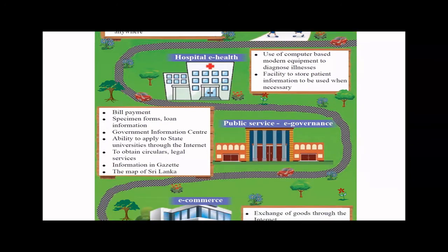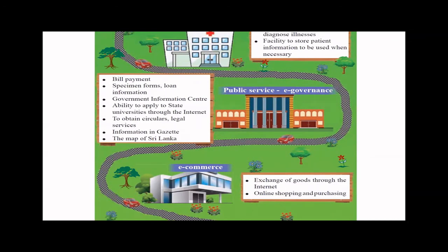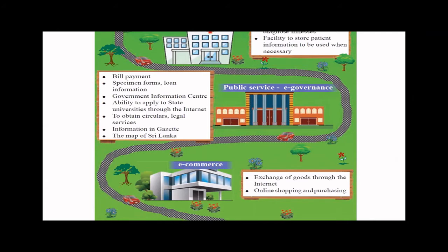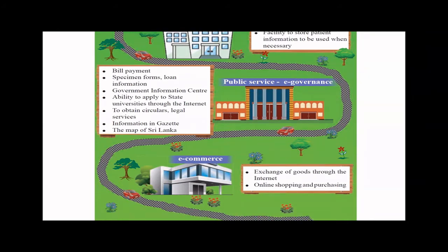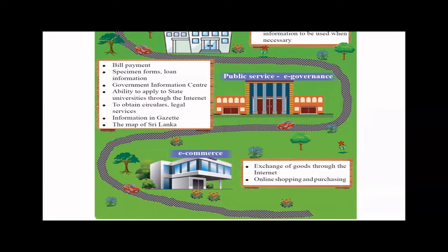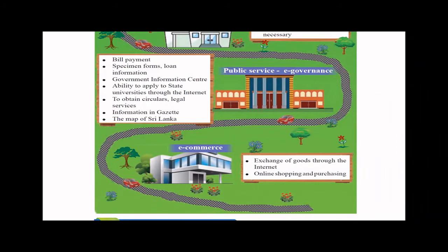Next is public service — e-governance. All bill payments, relevant information, and forms can be gathered through the internet. For example, applications for state university can be done online. You can obtain circulars, legal documents, and services like revenue license renewal using online services — no need to go to particular places. Even a map of Sri Lanka is a kind of public service, where you can get all road maps and easily navigate.